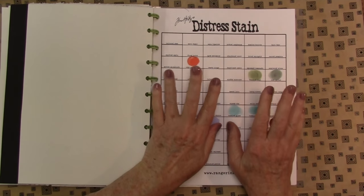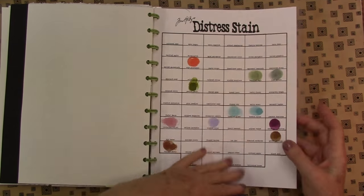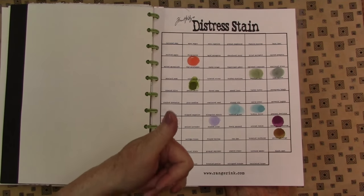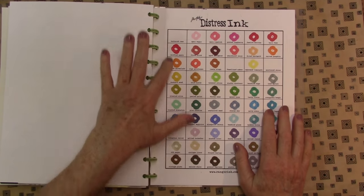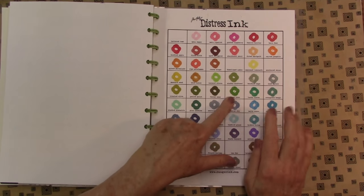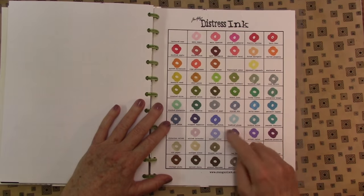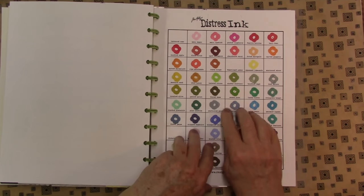These are not all up to date, that's like a good summer job. Distress stains - you can go to the Ranger website, I will link down below, and you can print out all these color charts which are an awesome reference because you can look at this and say oh I'm going to use these colors or I'm going to use these colors.